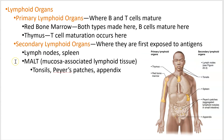Moving on to the organs — the primary organs are where B and T cells mature. This includes your red bone marrow and your thymus. B cells and T cells are both made in the marrow, but B cells mature there, whereas T cells mature in the thymus.